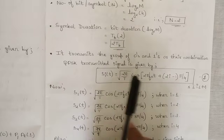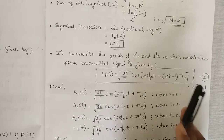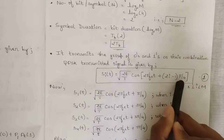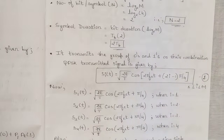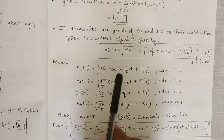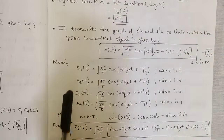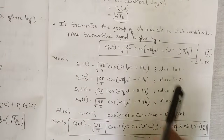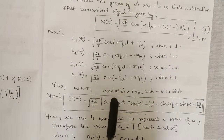The QPSK transmitted signal si(t) is given by: si(t) = sqrt(2E/T) * cos(2π·fc·t + (2i−1)·π/4), where pi/4 arises because we have four quadrants, each divided into angles of 45 degrees for a complete 180 degrees, and i varies from 1 to M. So s1(t) has phase π/4, s2(t) has 3π/4, s3(t) has 5π/4, and s4(t) has 7π/4 for i = 1, 2, 3, 4 respectively.